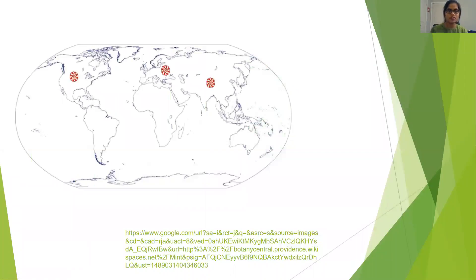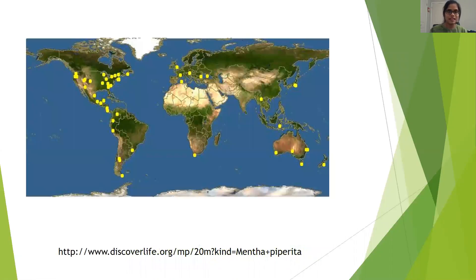Mentha piperita is abundantly found in parts of North America, Europe, and Asia. It is abundant due to its fibrous root system, which helps it grow through the soil and grow rapidly. This map shows the parts where the plant is really productive.